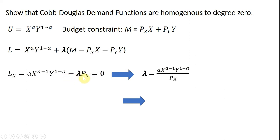What I like to do now is solve this for lambda. So moving this lambda term over to one side and dividing through by the price of good X, we get this result.